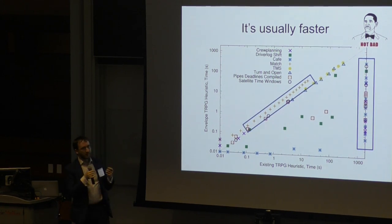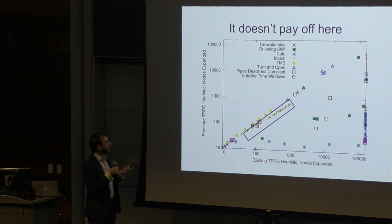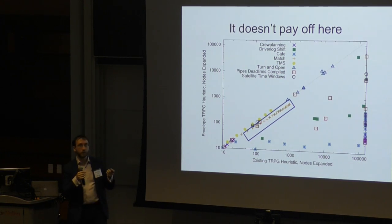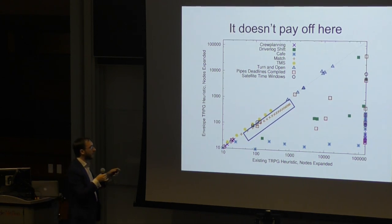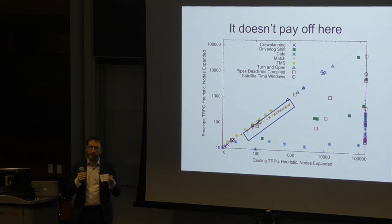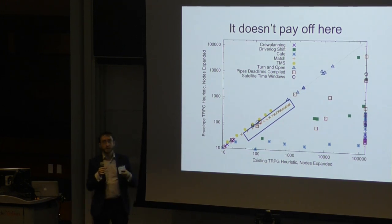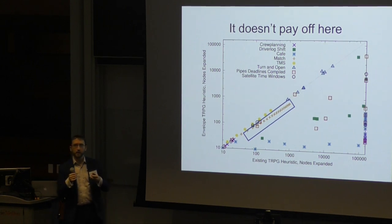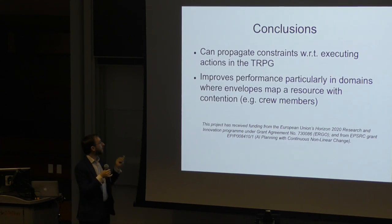There are some interesting cases where actually it's not faster. And what's happening here, so this is the match domain, where we are providing better heuristic guidance. If we actually look, we are expanding fewer nodes. But there are some overheads in propagating these labels throughout the planning graph. So the extra time taken in the heuristic evaluation of each state isn't paying off in terms of the overall runtime of the planner. But if you have envelopes, and particularly if you have contended resources, so things like crew operations or the shift of the driver, this gives you some nice results in terms of how well you can scale. Those are my conclusions. Thank you very much.